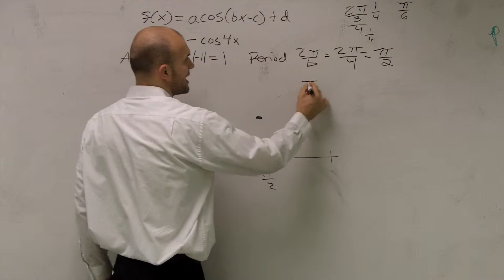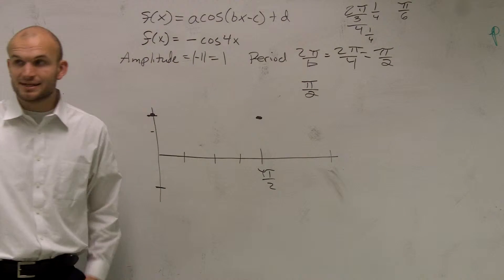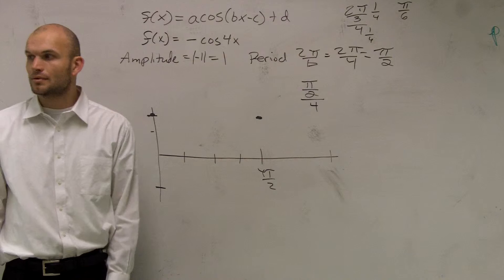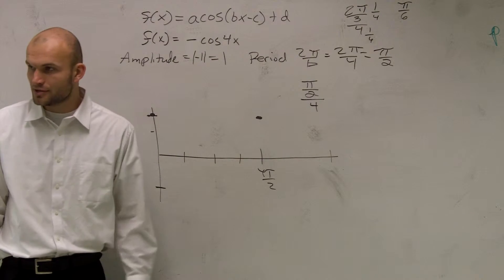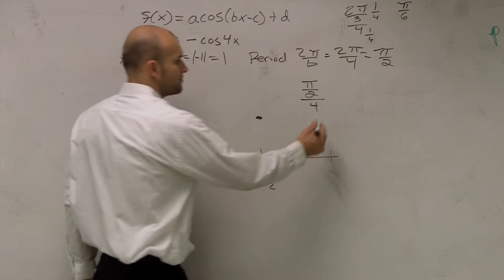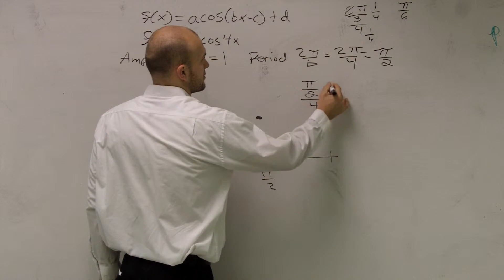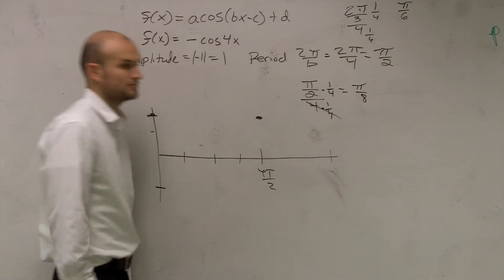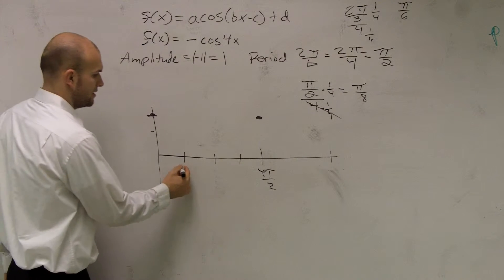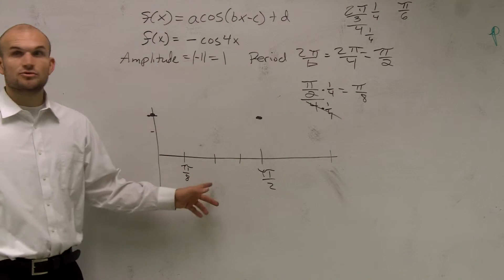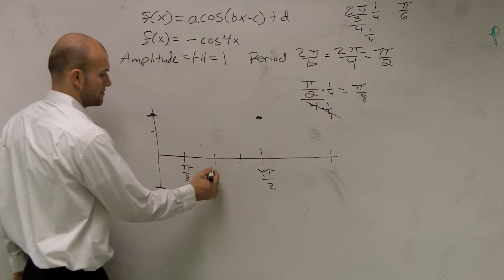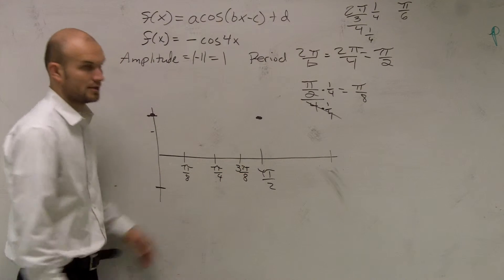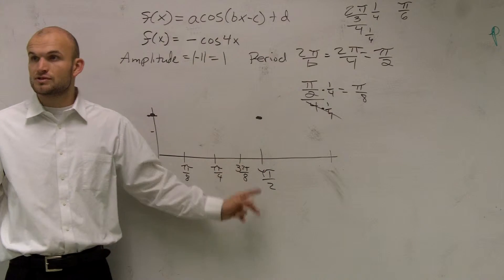So if my period is π over 2, what I need to do is divide that into four equal parts — so divide by 4. We have a fraction divided by a number, so to get rid of the fraction we multiply by its reciprocal. That cancels out and I'm left with π over 8. So the first point is π over 8, the second is 2π over 8 which reduces to π over 4, the third is 3π over 8, and the fourth is 4π over 8 which reduces to π over 2.